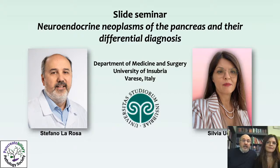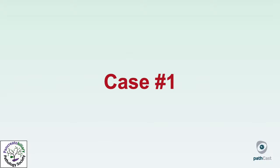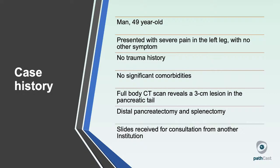Welcome to the slide seminar. We will present four cases; the first two by Professor Uccella. Case 1: a 49-year-old man presented with severe pain in the left leg with no other symptoms, no trauma history, no significant comorbidities. He underwent a full body CT scan that revealed a 3 cm lesion in the pancreatic tail, and subsequently underwent pancreatectomy and splenectomy. The slides were received for consultation from another institution.